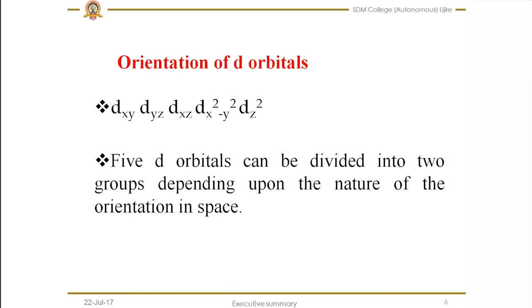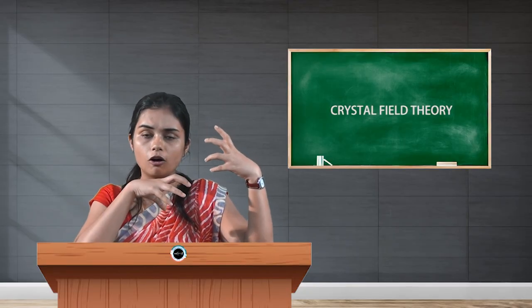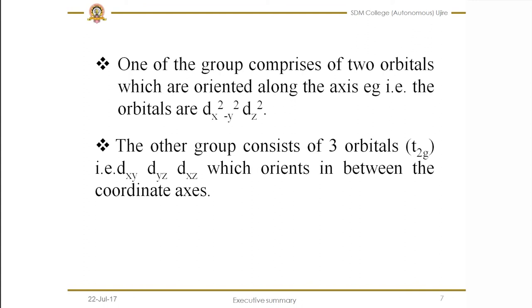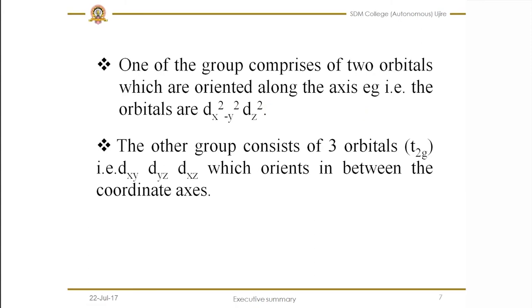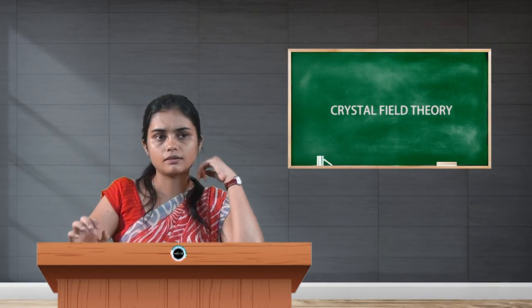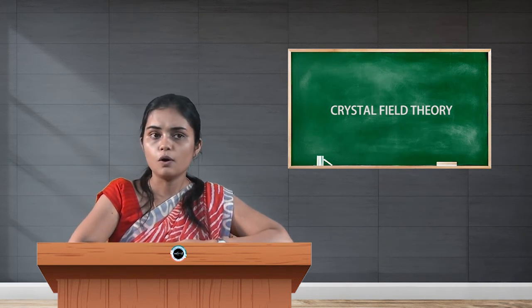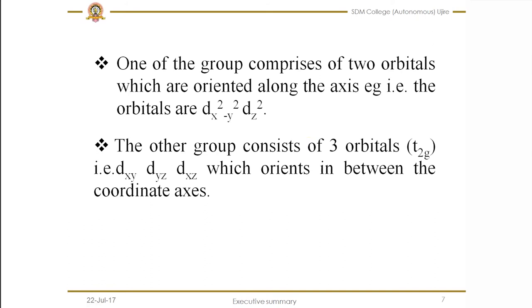These 5 d orbitals can be divided into two groups depending upon the nature of their orientation in space. One group comprises two orbitals oriented along the axis, designated as eg — these are dx²-y² and dz². These orbitals orient along the axis. The other group consists of three orbitals — dxy, dyz, and dxz — which orient in between the coordinate axes, designated as t2g.